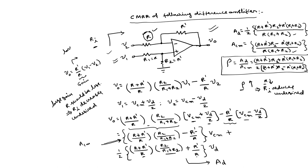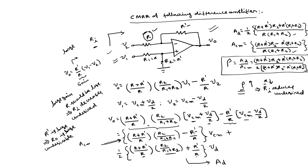So without changing the input and output resistance, how do we increase both gain and CMRR? The solution is called the instrumentation amplifier. An instrumentation amplifier, based on a difference amplifier with voltage followers, can increase gain and CMRR without affecting input or output resistances. Before discussing the instrumentation amplifier, we first discuss the voltage follower.